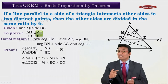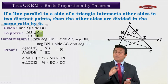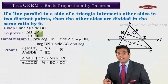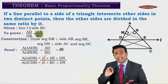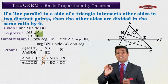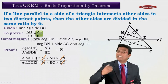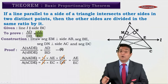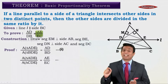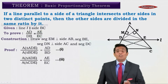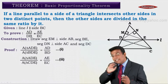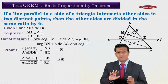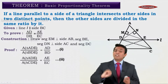Now when we divide the two areas, the halves cancel and DN cancels, so we get: area of triangle ADE upon area of triangle CDE equals AE upon EC. That is statement number 2. So now we have both ratios — the left-hand side ratio from statement number 1, and the right-hand side ratio from statement number 2. The only thing remaining is to get them equal.